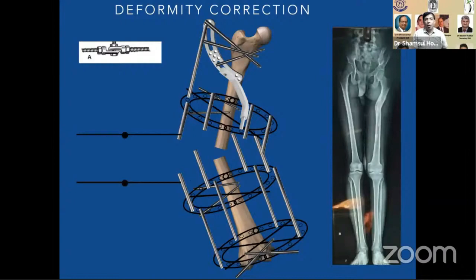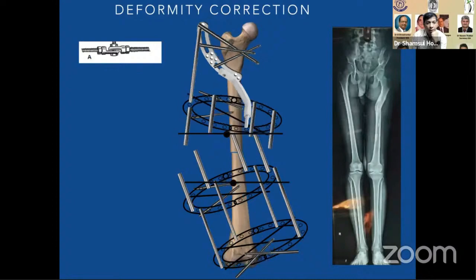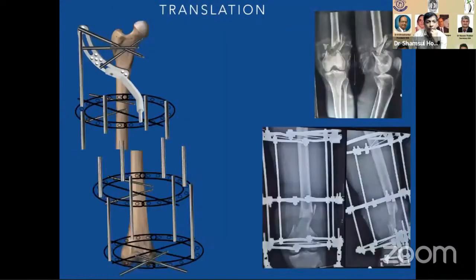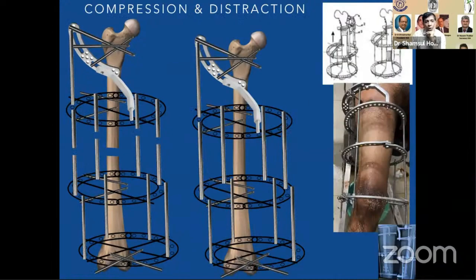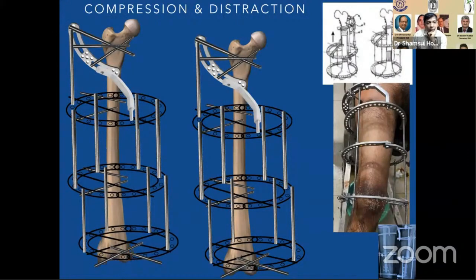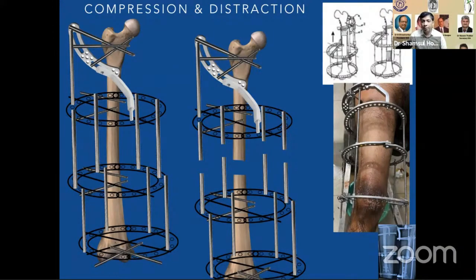For deformity corrections the assembly remains almost the same. We can use olive wires and hinges for acute correction, or gradual correction with olive wires over the ring. If there is a translation seen on X-ray after applying the rings, we can reduce acutely or use plates for gradual correction. Compression and distraction can be done as needed using rods or distractors. For limb shortening we can do lengthening with the same frame. The corticotomy level in the femur is either subtrochanteric or the supracondylar metaphyseal-diaphyseal junction.